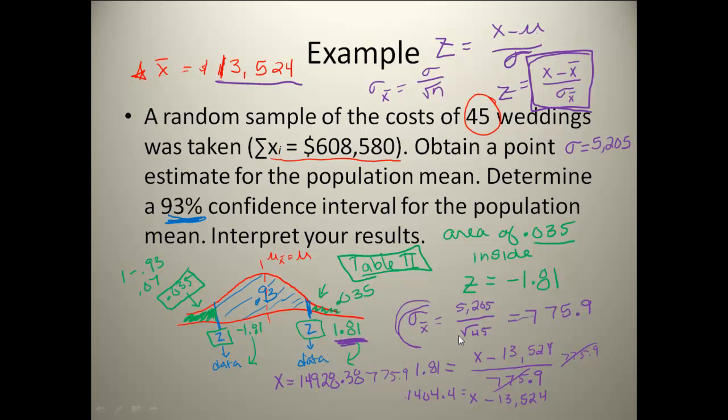Now to get my lower one, I'm going to come back to this point right here. And instead of putting in my positive z-score of 1.81, I'm going to put in my negative z-score of 1.81. So now in order to do this, I would still do the same algebra processes. I would multiply both sides by 775.9. And when I do that, I get negative 1404.4.